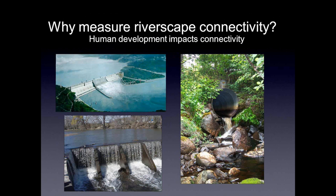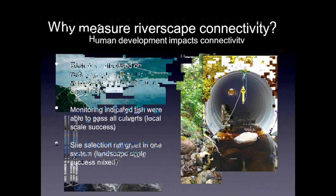So it was very much a rapid assessment — flying by the seat of their pants, as Dave likes to say — to determine which culverts to prioritize. What they focused on in their restoration activities was reducing outlet drops and reducing velocity. They increased structural complexity within the culverts by introducing baffles and cobbles. Monitoring after the restoration activities indicated that fish were able to pass all of the restored culverts, which was a check that at the local scale they had been successful.